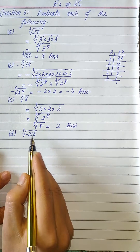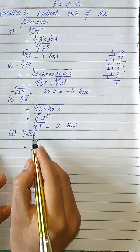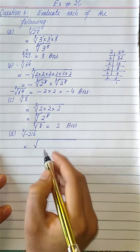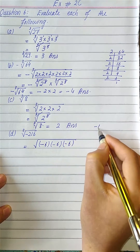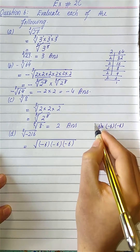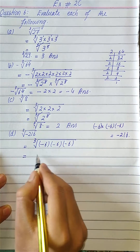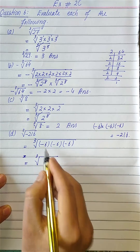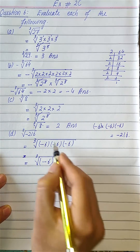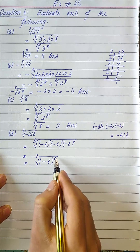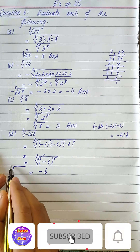In part d, we have cube root of minus 216. Since 216 is the cube of 6, we can write minus 216 as minus 6 times minus 6 times minus 6. This can be written as minus 6 whole raised to the power 3, because they all have the same base and their powers add up to give a cube. The cube cancels with the cube root, leaving minus 6, which is the answer for cube root of minus 216.